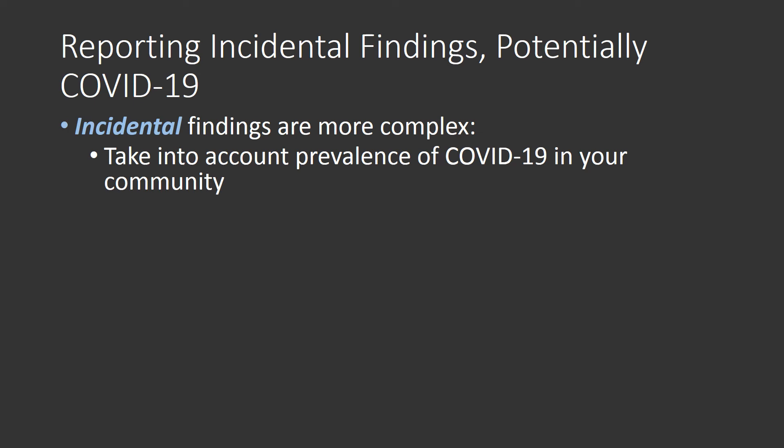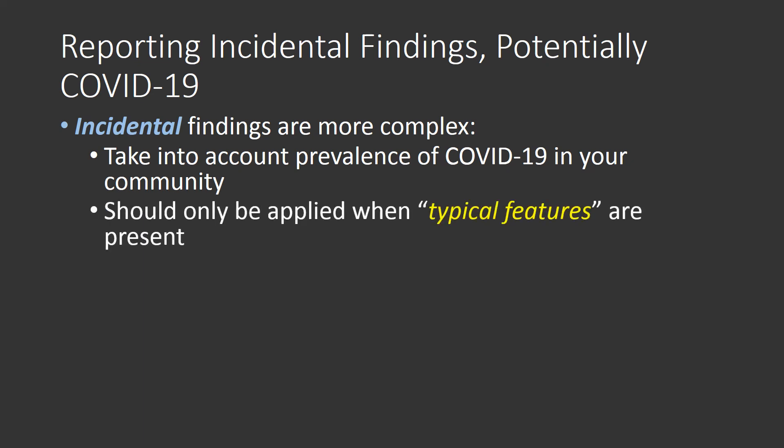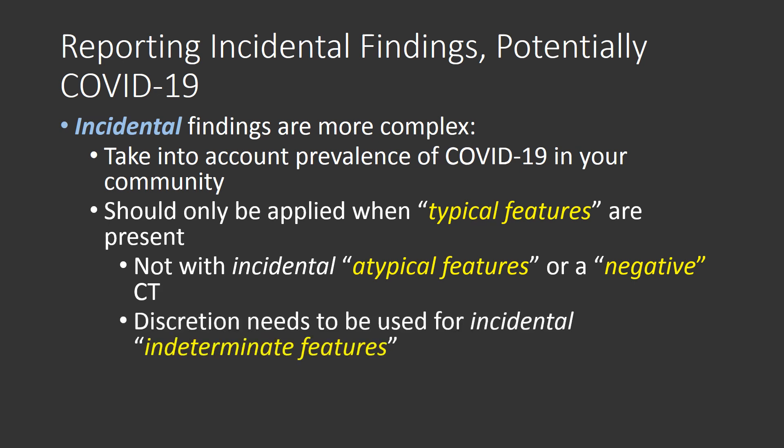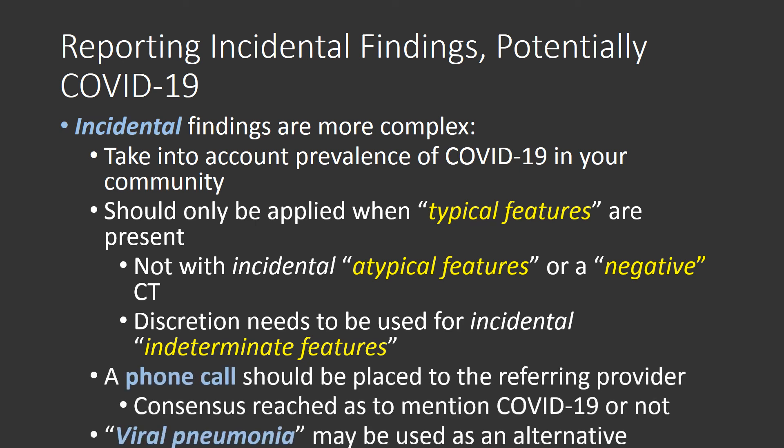When dealing with incidental findings potentially attributable to COVID-19, this is a more complex scenario. Take into account the prevalence of COVID-19 in your community, and only use this language as an incidental finding when typical features are present — not with atypical features or a negative CT. Discretion is needed for incidental indeterminate features: in an endemic area with significant ground glass opacity without clear distribution, contact the physician. If only a few tiny ground glass opacities are present in a non-endemic area, these may be less clinically relevant. Ultimately, a phone call to the referring provider and consensus should be reached as to whether to mention COVID-19; if not, viral pneumonia is an alternative.